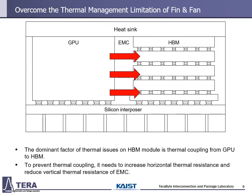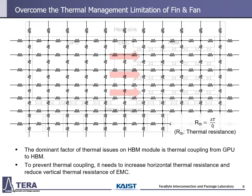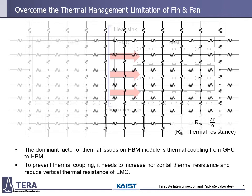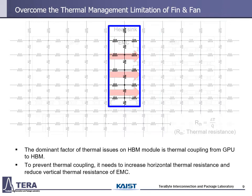The dominant factor of thermal issues on the HBM module is thermal coupling from GPU to HBM. The main point of thermal management of HBM is to prevent that thermal coupling. But the conventional thermal management system, fin and fan, cannot prevent that thermal coupling. To overcome the thermal management limitation, we need a thermal resistance circuit model-based analysis of the HBM module. The smaller the thermal resistance, the larger the amount of heat that can move. For preventing thermal coupling, the epoxy molding compound (EMC) between GPU and HBM needs to be considered. It needs to increase horizontal resistance and reduce vertical thermal resistance of EMC by changing the structure of that area.